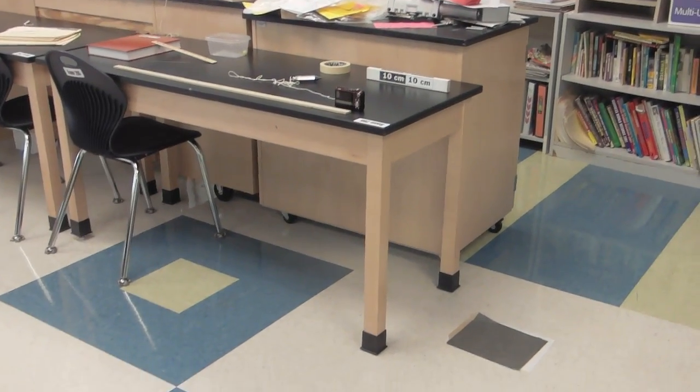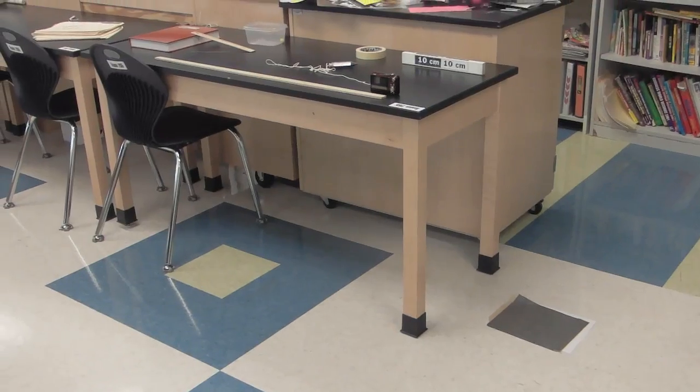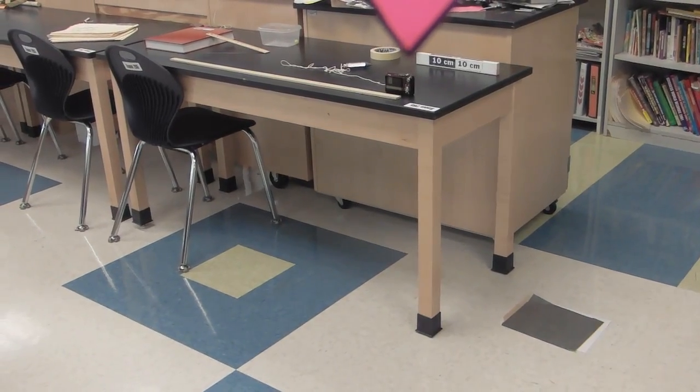So this is the basic lab setup. I've got the carbon paper over here on the floor, it's on top of a regular piece of paper. I've got a measurement stick with a high speed camera in front of it.